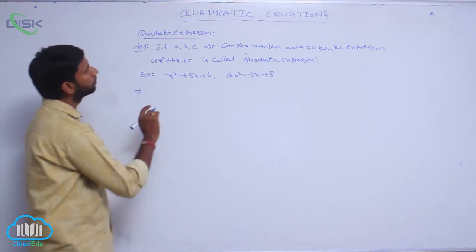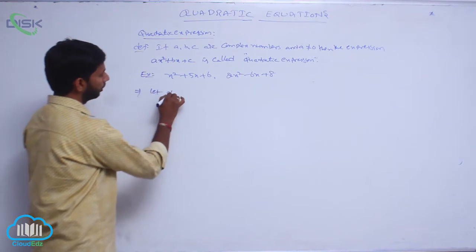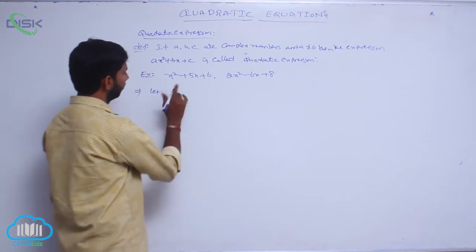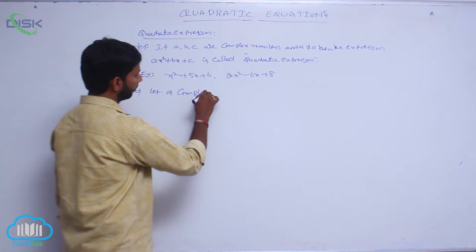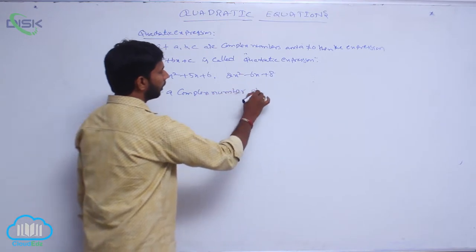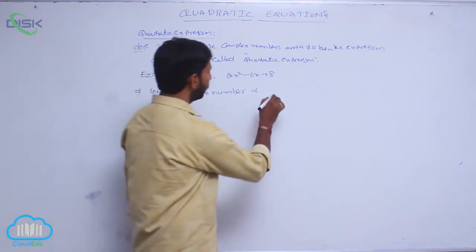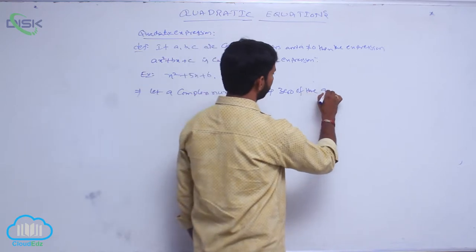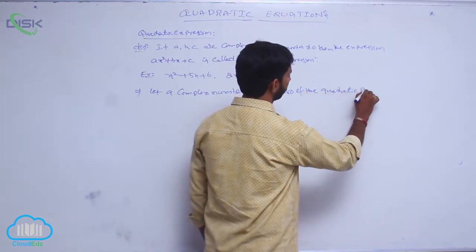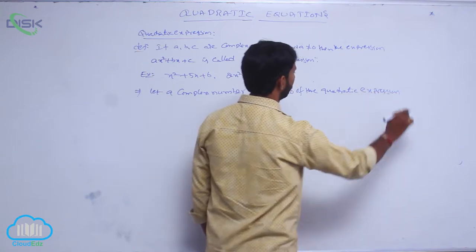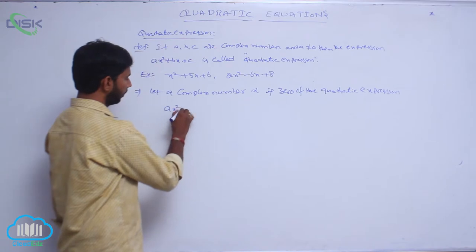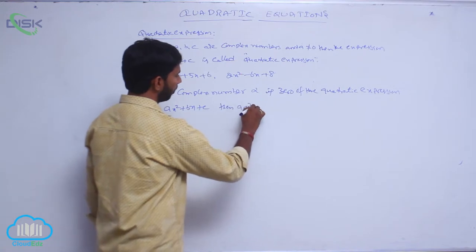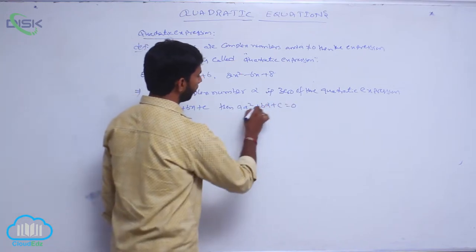Next, let alpha be a complex number. If alpha is the zero of the Quadratic Expression ax² + bx + c, then a·alpha² + b·alpha + c = 0.